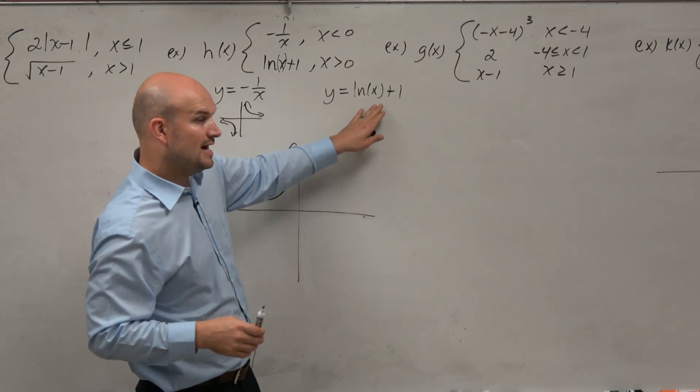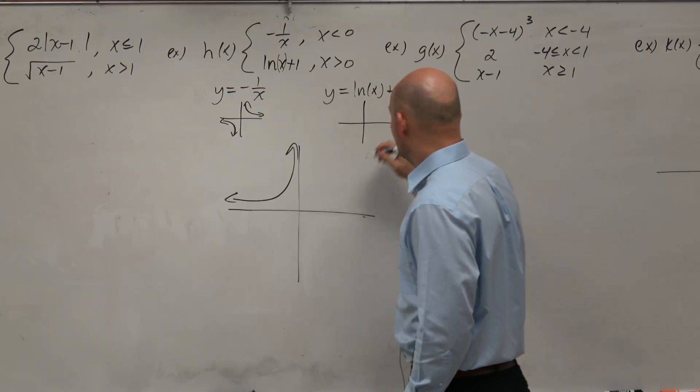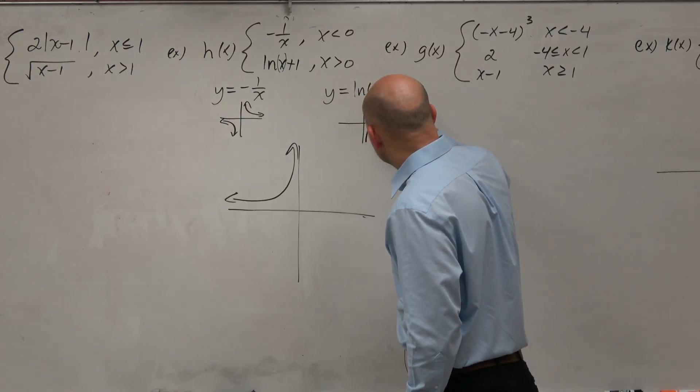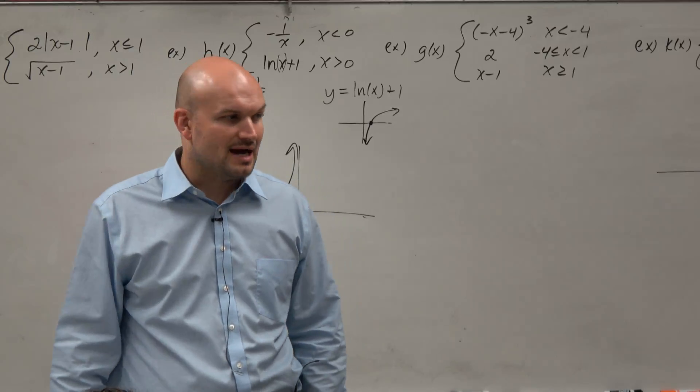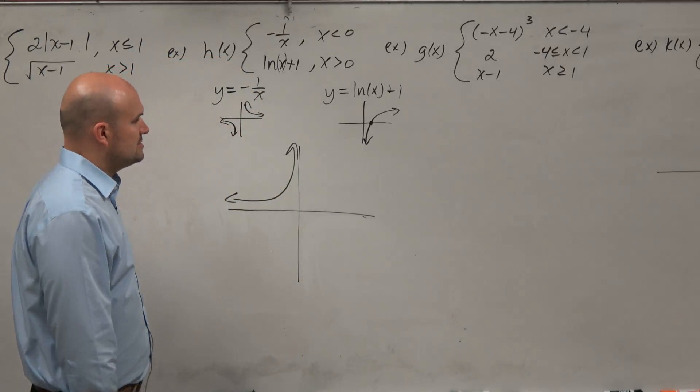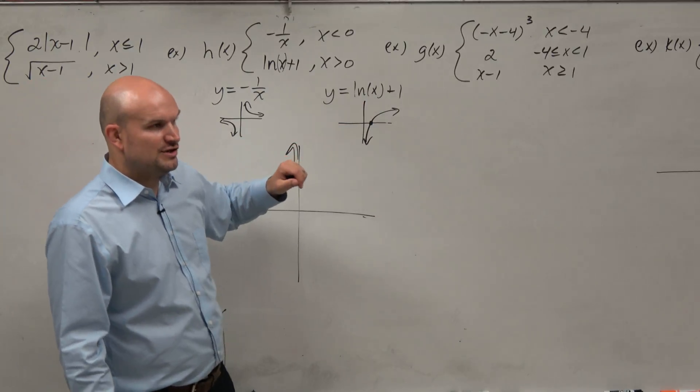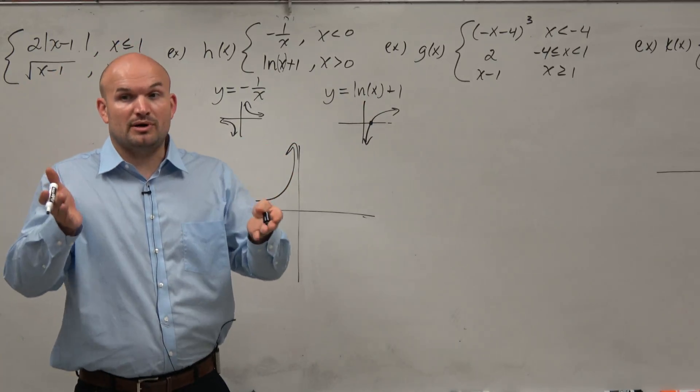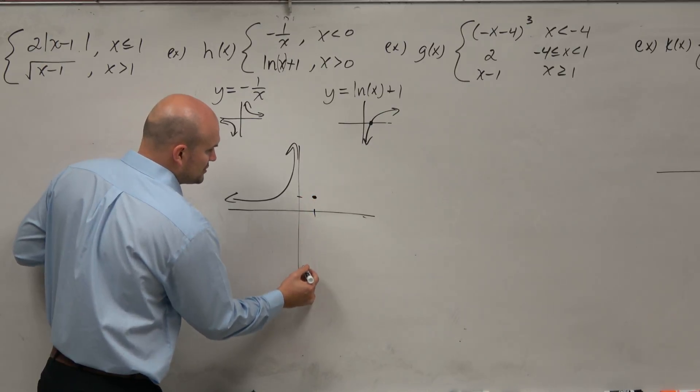Now we go to the next one, the ln function. We've got to make sure we remember: ln has an x-intercept at 1 comma 0, sorry, has a vertical asymptote at x equals 0. And then we understand, what is that transformation? The transformation is just moving that up 1. So we literally just go up 1 over 1, and then we re-sketch the graph.